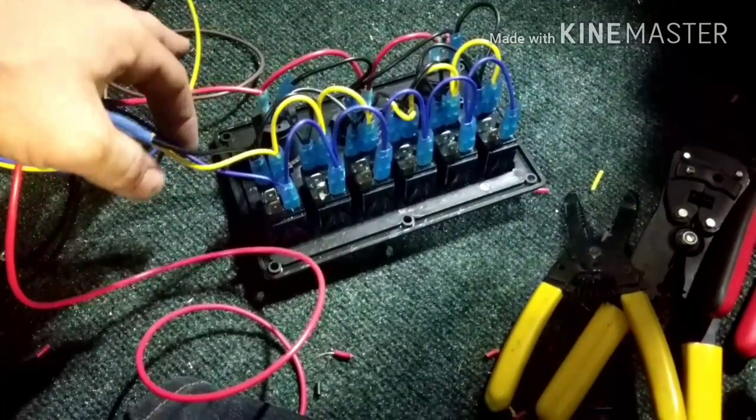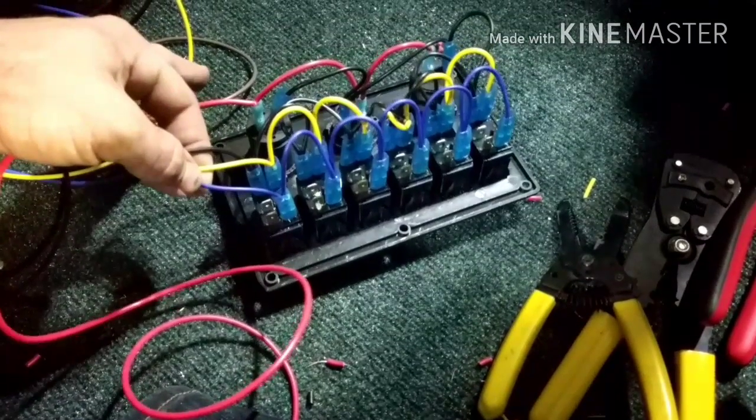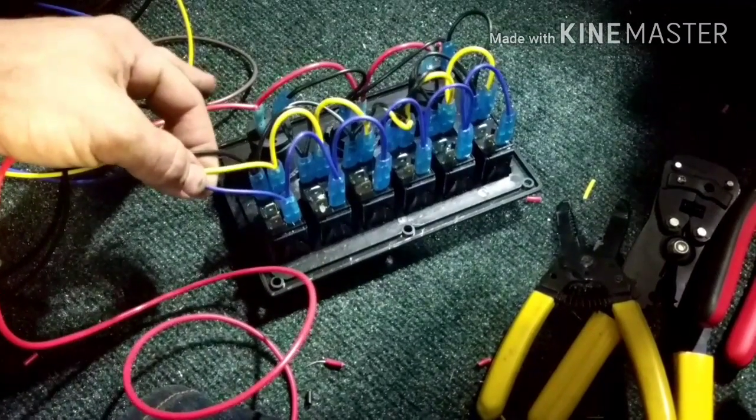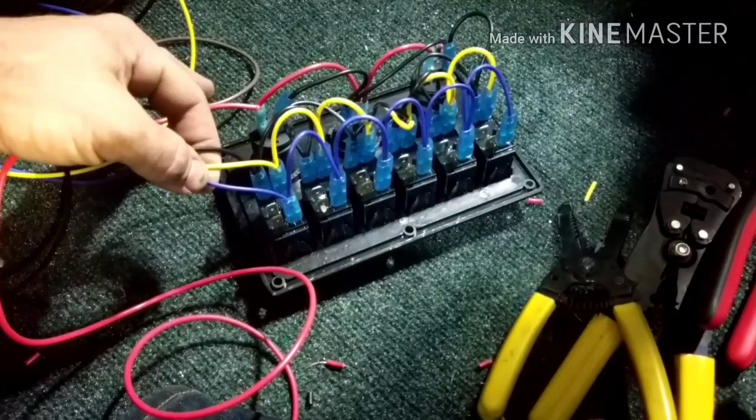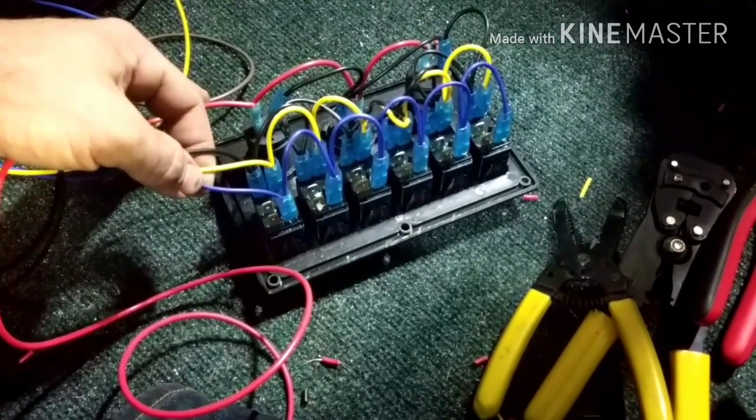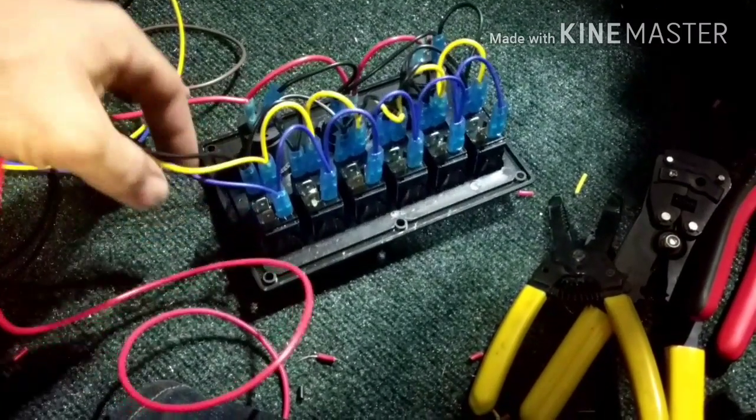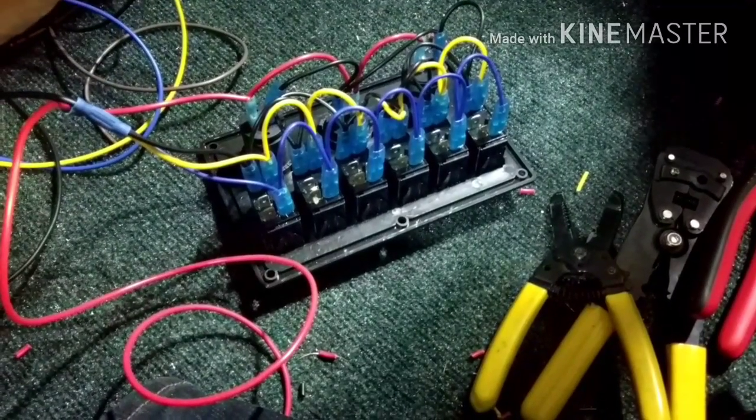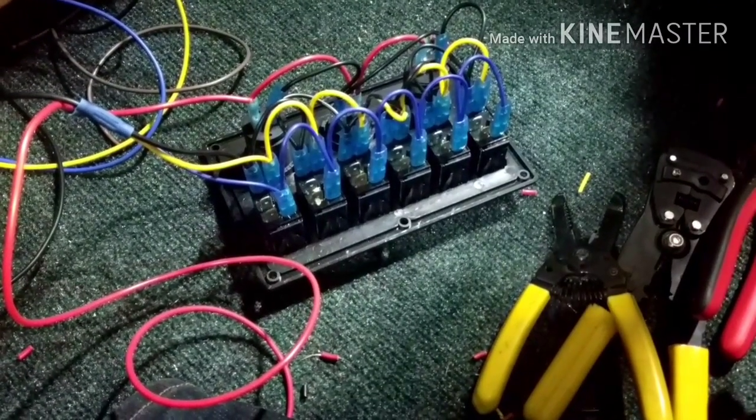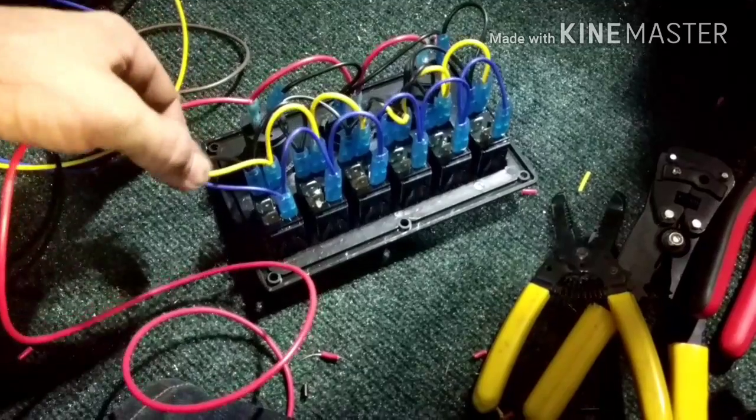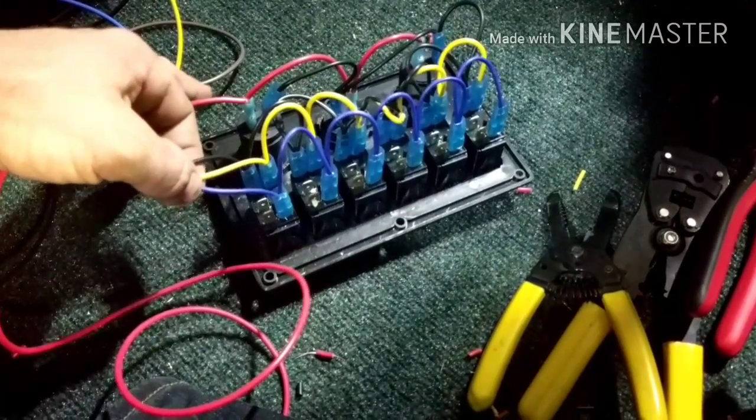Now remember, you do not need to have the yellow and blue wire hooked up for the switches to work. All those two wires are for is to light up the LEDs on the switch. There's actually two sets of LEDs. One will turn on when you flip the switch. The other one is continuous. The yellow and the blue are for the continuous LEDs.